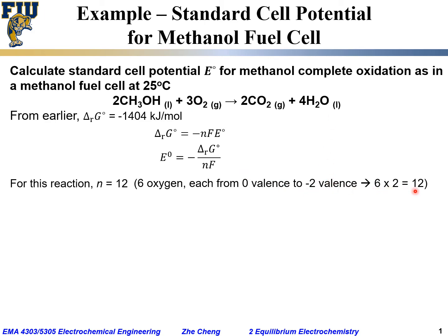Six times two equals twelve, so twelve electrons got transferred for this reaction — or twelve moles of electrons per mole of reaction progression. Remember, it's not one mole of methanol oxidized or one mole of CO2 produced; it's one mole of reaction progression.